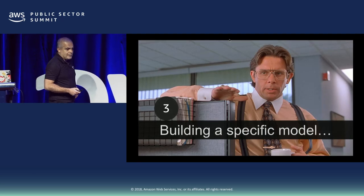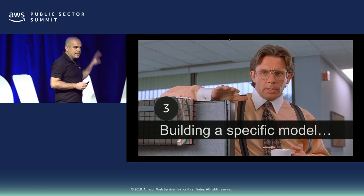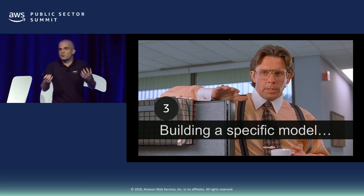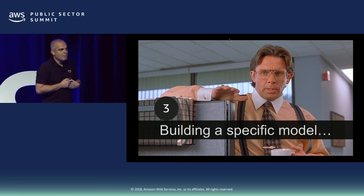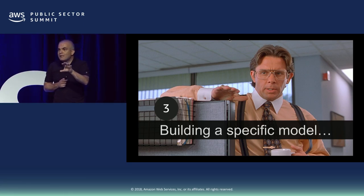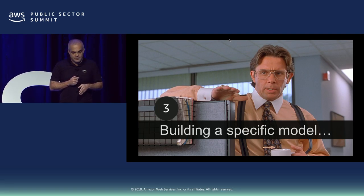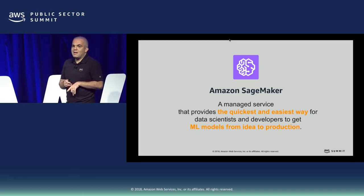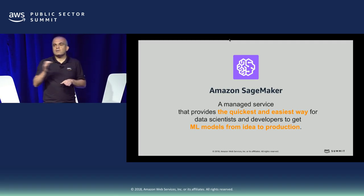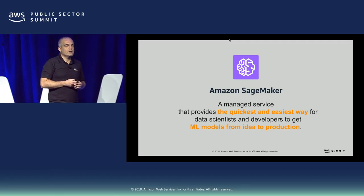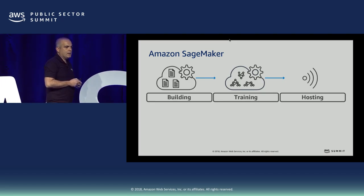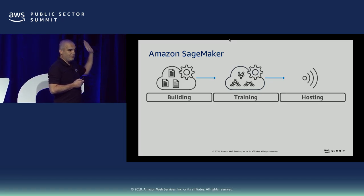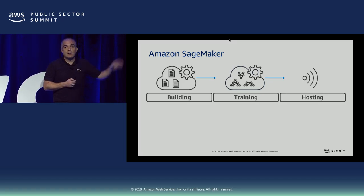Now let's do something more advanced. In the previous examples, I used the application services layer consuming pre-built models as APIs. But what if you have something specific and need to create the model through all the steps? One way to do this in AWS is SageMaker — a managed service that helps you with the full flow and all steps to create your model using machine learning: building, training, and hosting the model.